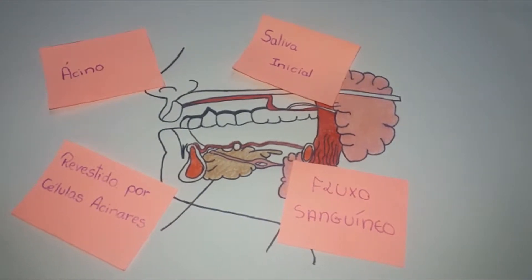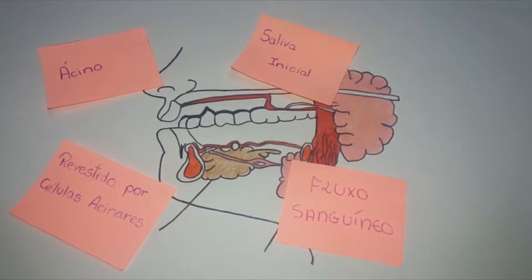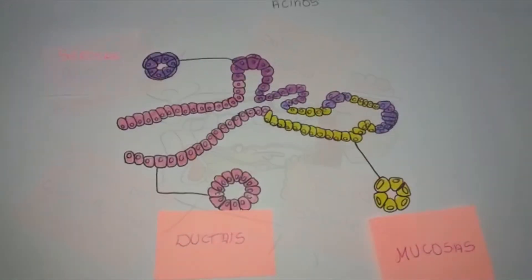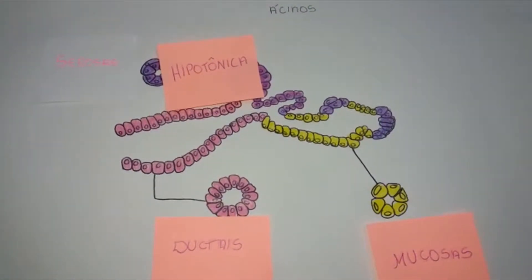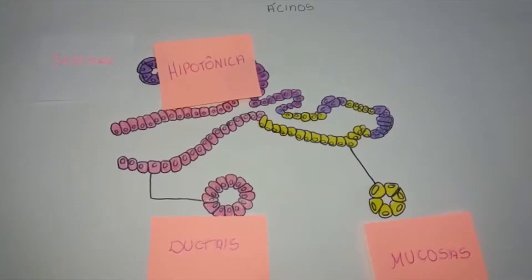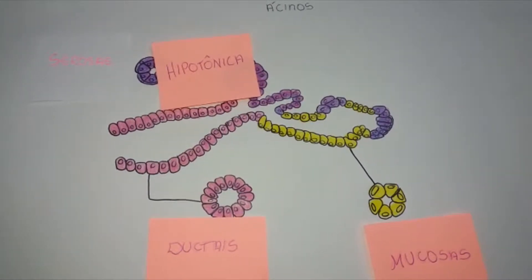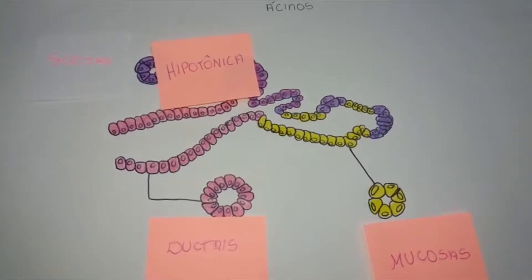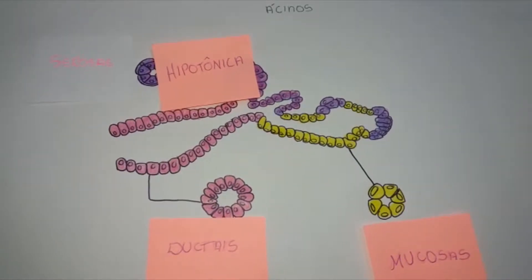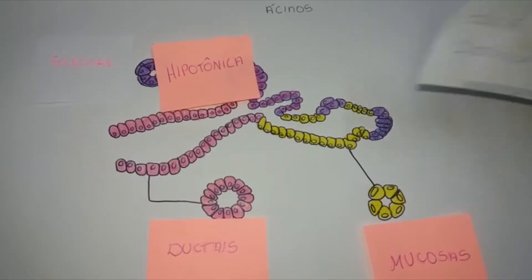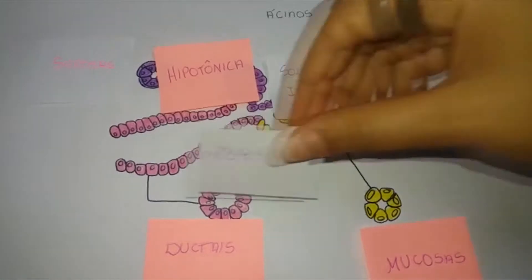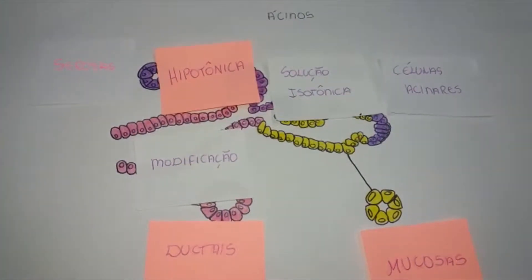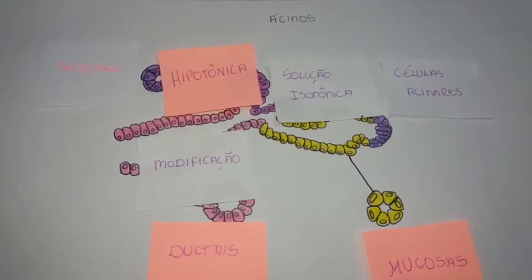Esse fluxo sanguíneo é 10 vezes maior que aquele destinado ao músculo esquelético em exercício. Quando comparada ao plasma, a saliva é hipotônica, com maiores concentrações de potássio e bicarbonato e menores concentrações de sódio e cloreto. A saliva não é ultrafiltrada do plasma, mas é formada em duas etapas: a primeira é a formação de soluções isotônicas pelas células acinares, e a segunda é a modificação dessas soluções isotônicas, semelhante ao plasma, pelas células ductais.